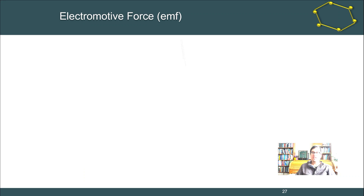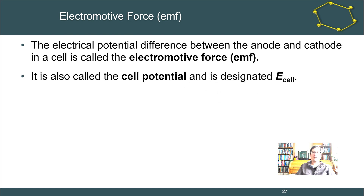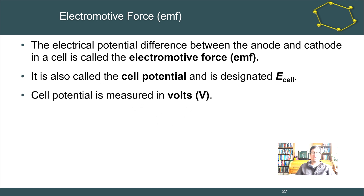Recall the electromotive force is the electrical potential difference between the anode and the cathode — that is the voltage produced in an electrochemical cell. We more commonly call it cell potential, capital E subscript cell, and it can be positive or negative. Cell potential is measured in units of volts, and when we combine our half-cell reactions we get our overall cell potential. One volt is equal to one joule per coulomb.